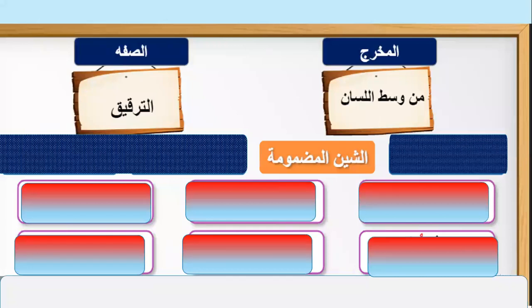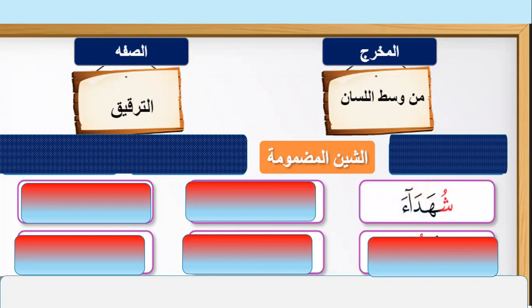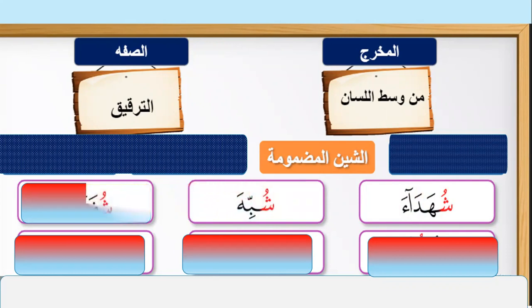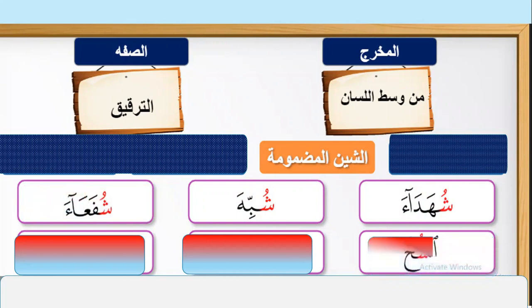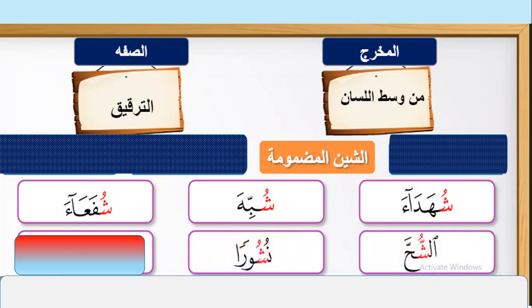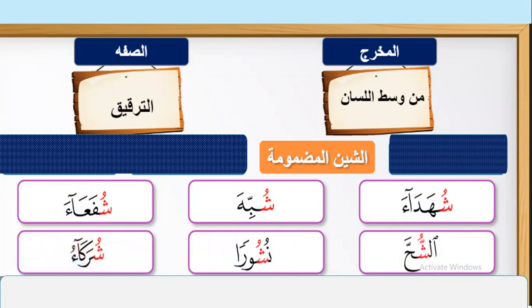Number two: Sheen with dhamma. Please repeat after me — Sheen dhamma: shuh. Shuhada, shubbiha, shufa'a, ashuhha, nushura, shuraka.